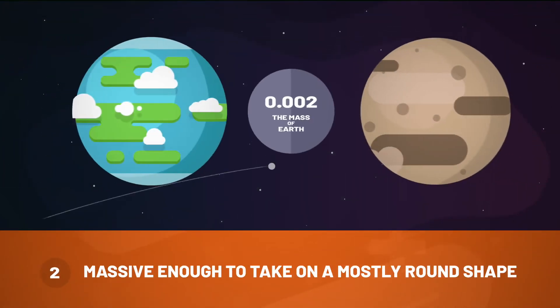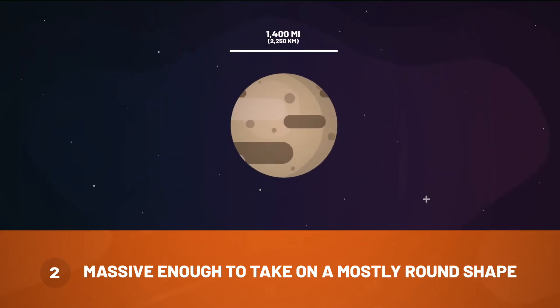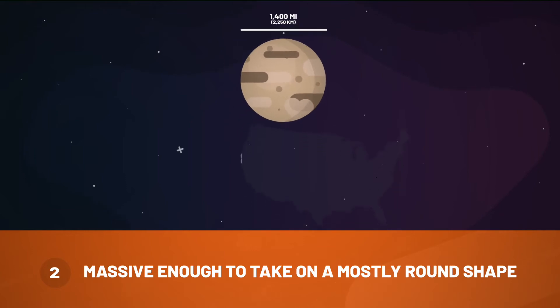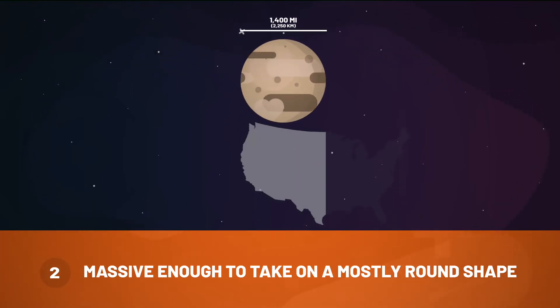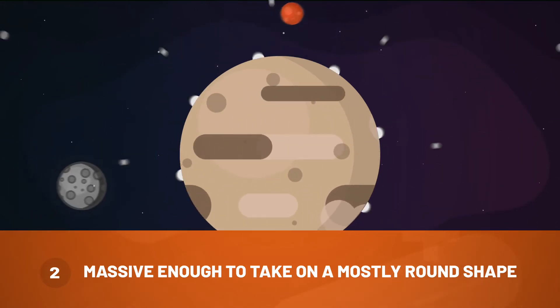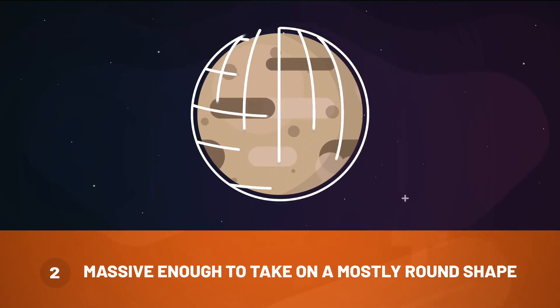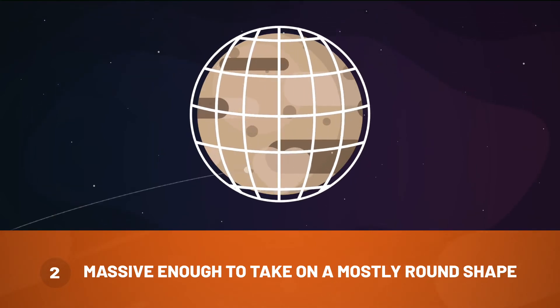Pluto has just 0.002 of the Earth's mass, which makes sense considering it's only about 1,400 miles across, or about half the width of the United States. But even a body this size has enough gravity to pull in lots of material. And as bodies, like Pluto, pull in material from all directions in toward their center, they take on a spherical shape.